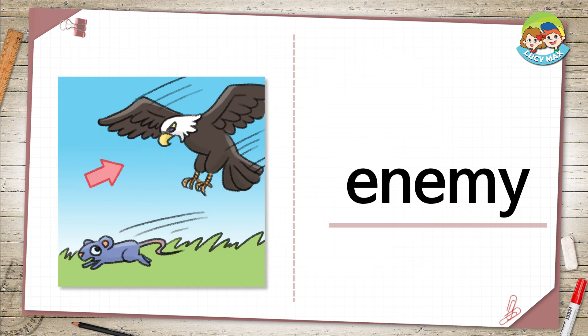Enemy. The mouse is running away from the eagle. If not, the eagle will catch and eat the mouse. The eagle is the mouse's enemy. What's a frog's enemy? A snake is one of a frog's enemies.